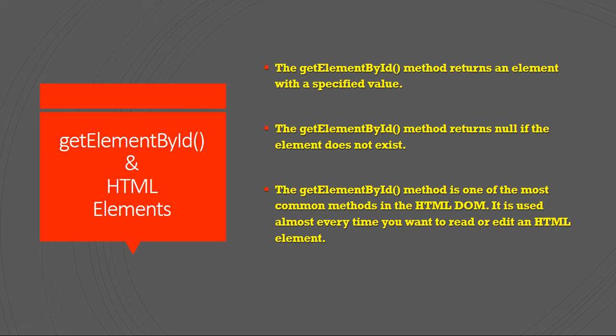The getElementById method returns an element with a specified value. The getElementById method returns null if the element doesn't exist — null meaning nothing, it returns nothing if the element doesn't exist.